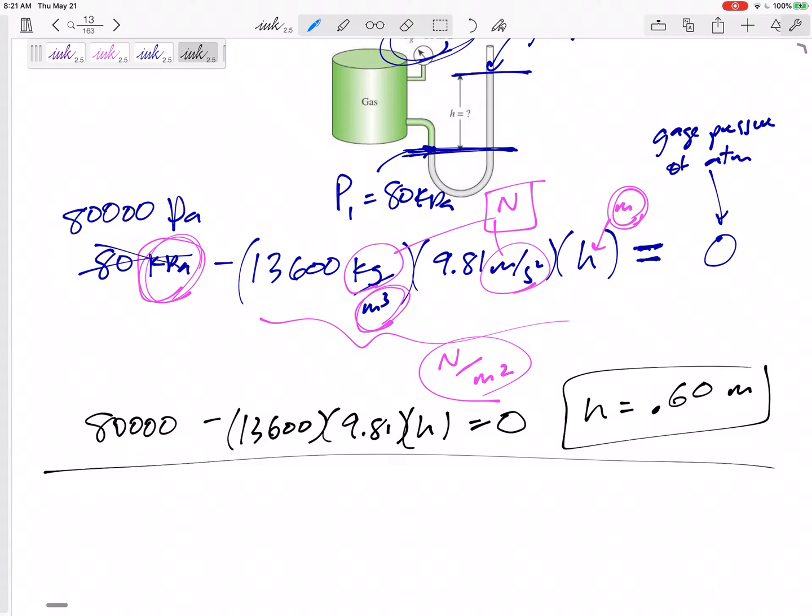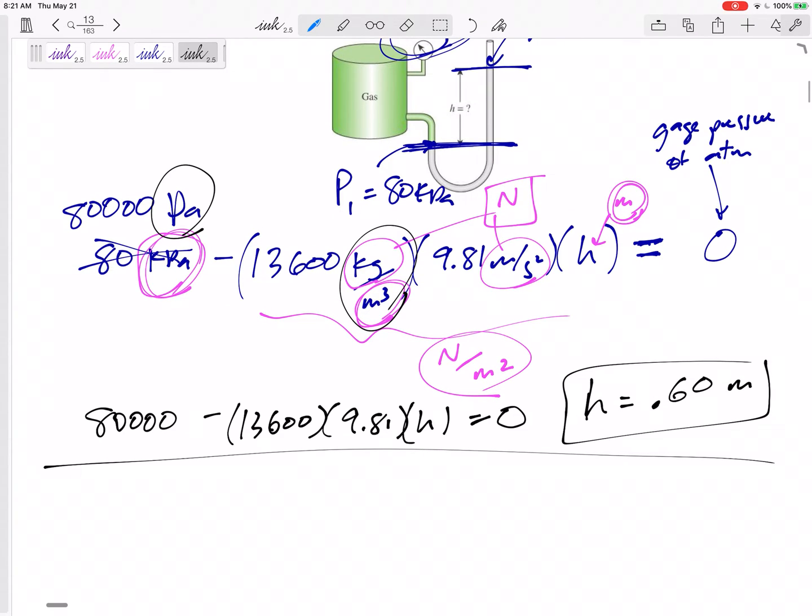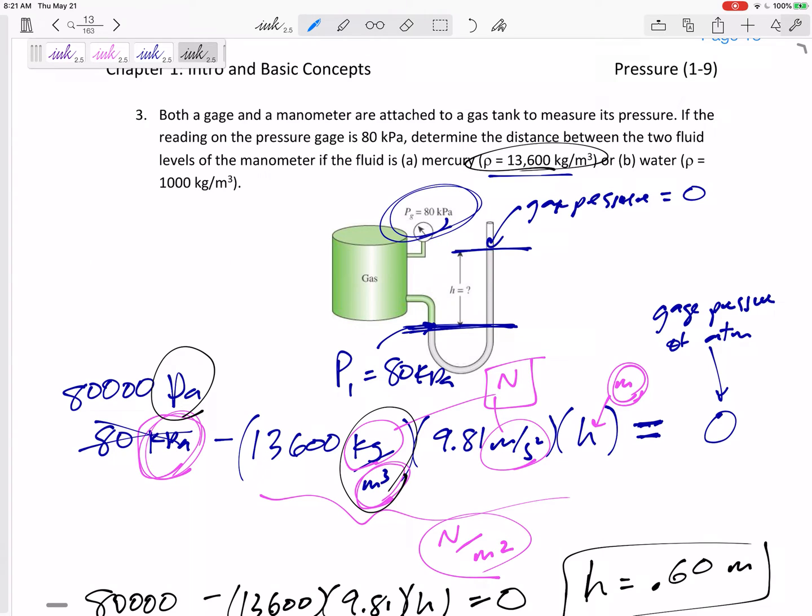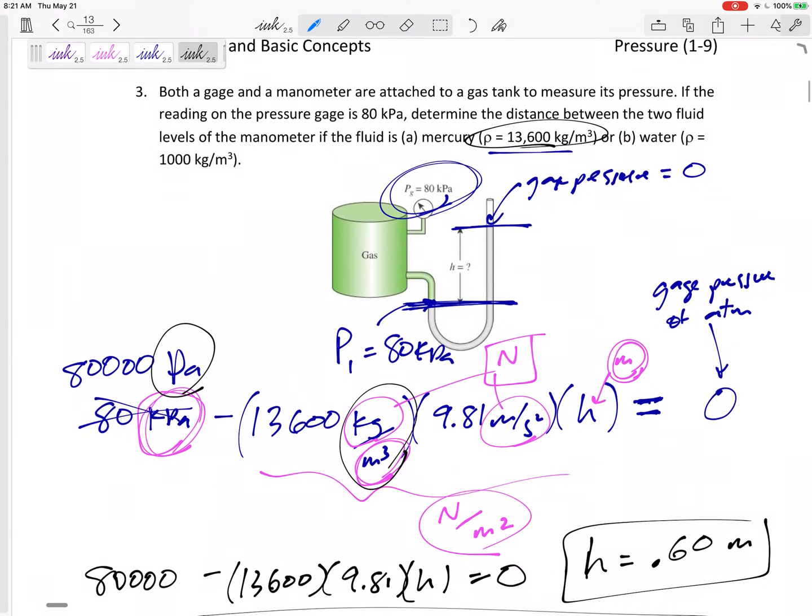Be careful with your units, but if everything's kilograms, meters, meters per second squared, meters cubed, then that is Pa, pascals. The height of the fluid in the manometer would be 0.6 meters if the fluid was pretty dense mercury. But what if the fluid was water?